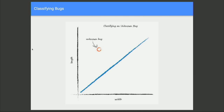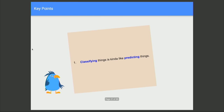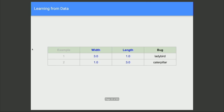If we've learned a good separating line and we find an unknown bug, we can say that falls in that half of the space, so it must be a caterpillar. So classifying things is kind of like predicting things. We apply these methods when we don't really know what the model should be, but we do have real data. We learn from data — we invent a model and try to refine it to match the data we've collected. It might be voice data, sentiment data, or something else.